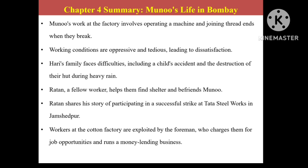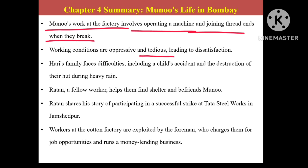Harihar was working in the cotton factory and not only he but his wife and children are also there. The wages are very low because the supervisor exploits him. The supervisor wanted to take benefit of unemployment in society and therefore paid very low wages. Even after being a very old man, Harihar was paid very low wages but had to accept that for survival. Munnu works at the factory, operating a machine and joining thread ends when they break. This was very tedious, time-taking, and laborious work, leading to dissatisfaction.